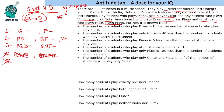The number of students who play drum is thrice the number who play only flute. Only drum players belong to the piano-guitar-drum category, so let only flute equal x, making drum players 3x. The number of students who play only guitar is 40 less than those who play exactly one instrument. Let only guitar equal n, so exactly one instrument is n plus 40. Since exactly one instrument equals n plus x, we get x equals 40. So only flute is 40 and drum is 120.